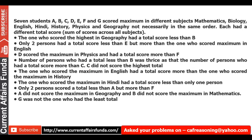Here the question is given in English. So here you have 7 students who have scored maximum in different subjects: Mathematics, Biology, English, Hindi, History, Physics, and Geography. Each student had a different total score — that is, the sum of scores across all subjects.